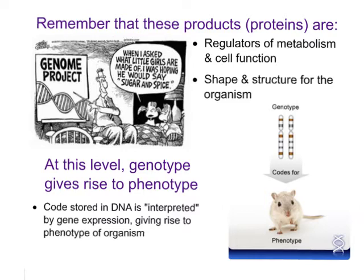Remember, these products of gene expression — these proteins — are many different things. They regulate metabolism, they regulate cell function, and they are the shape and structure of the organism. It's really amazing that at this molecular level, genotype gives rise to phenotype. The DNA genotype expresses itself in these proteins; it's the very molecular level of the phenotype of the organism. The code stored in the DNA is interpreted by gene expression, giving rise to that phenotype.